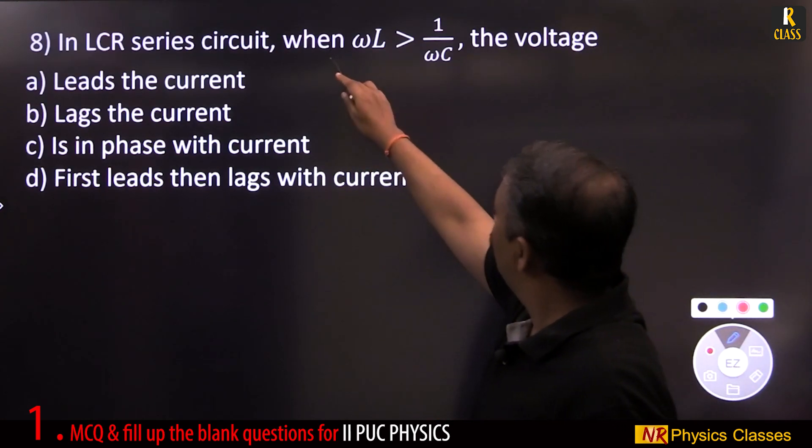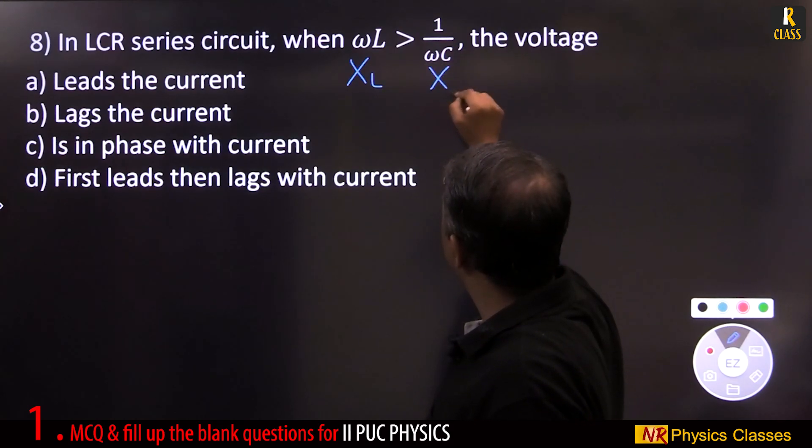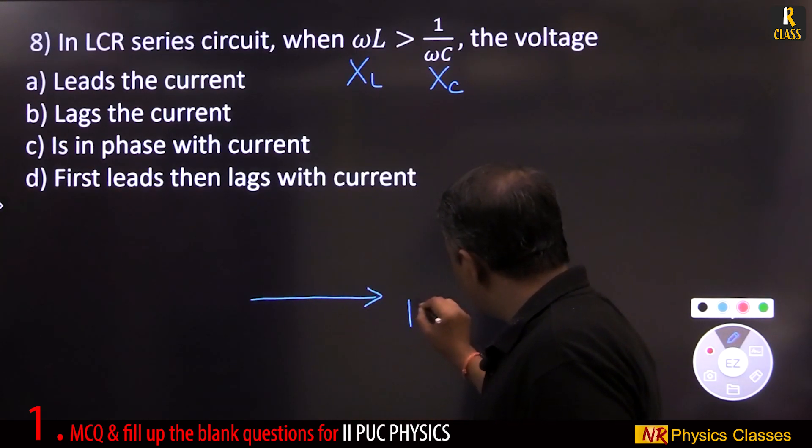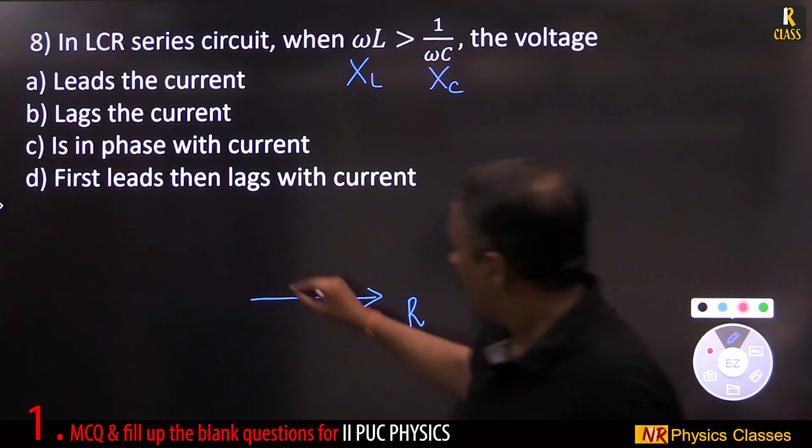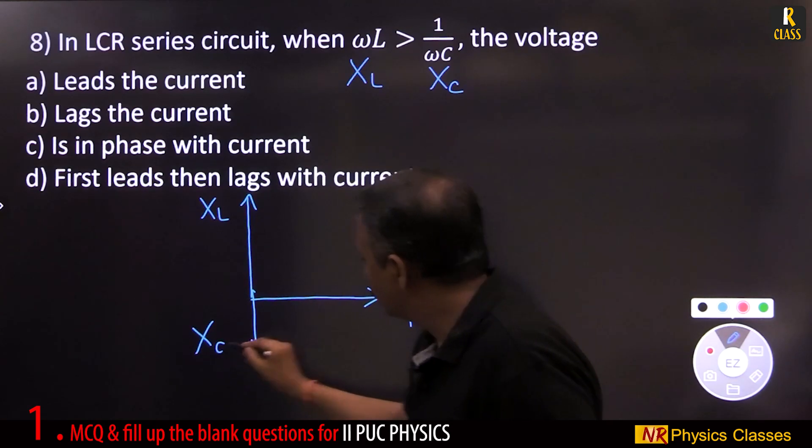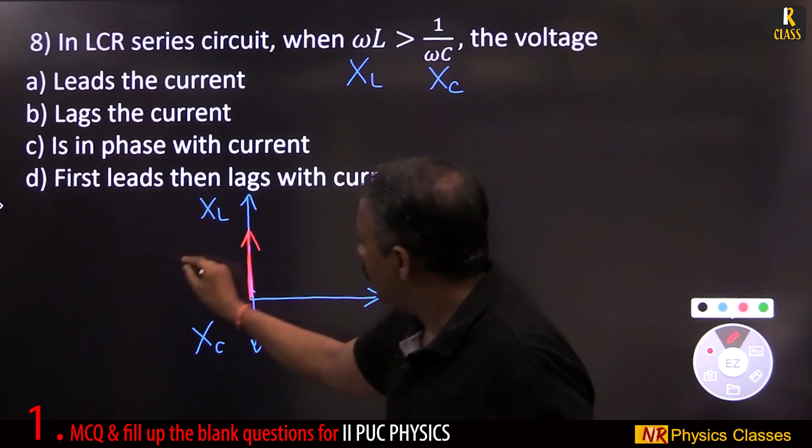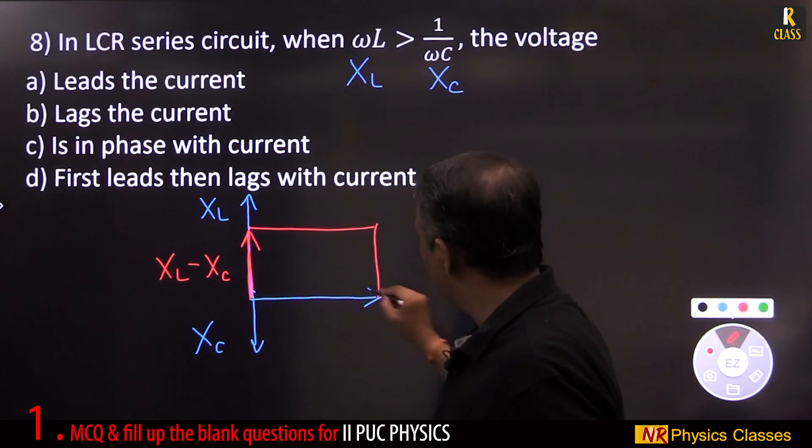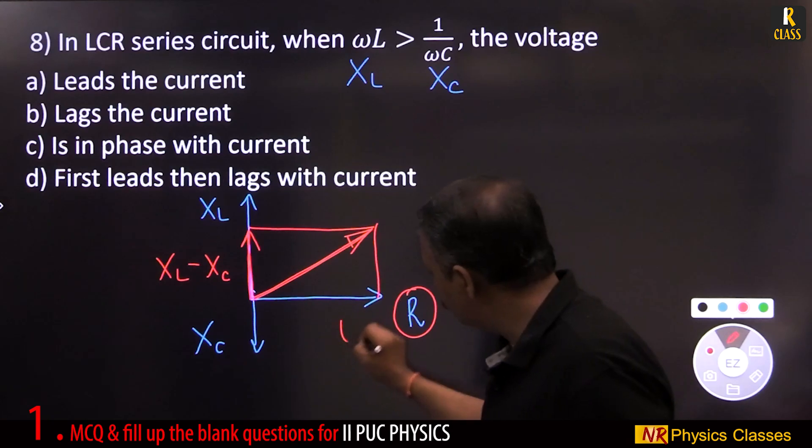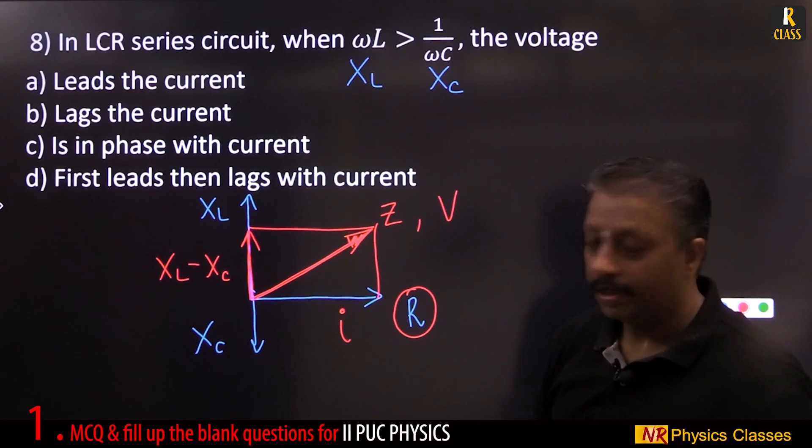In LCR series circuit, when omega L is greater than 1 by omega C, the voltage. Omega L means related to xL, this is xC. If xL is greater than xC, see the result. Phasor along the x axis should be for resistor. This is for inductor, xL greater than, let this be xC. Shorter vector, longer vector. Difference of these two is xL minus xC. Now complete the parallelogram, draw the diagonal. Wherever you write resistor, there you should write current. And this hypotenuse is impedance, and impedance is nothing but proportional to voltage.